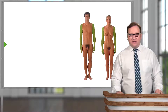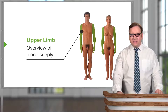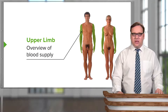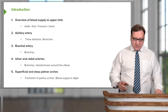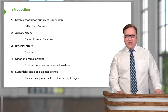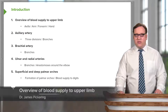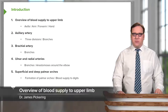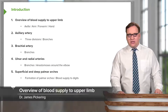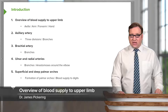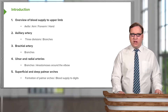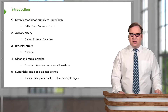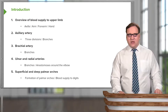In this lecture, we're going to look at the blood supply to the upper limb. It's going to be an overview of the blood supply. We'll look at the blood supply to the axilla, the arm, the forearm, and the hand.